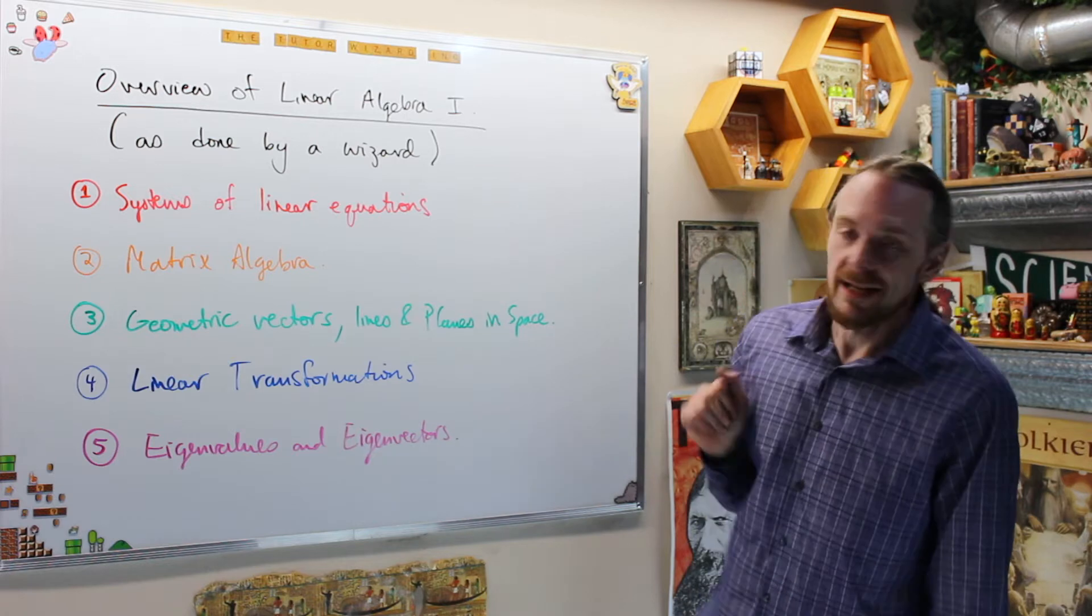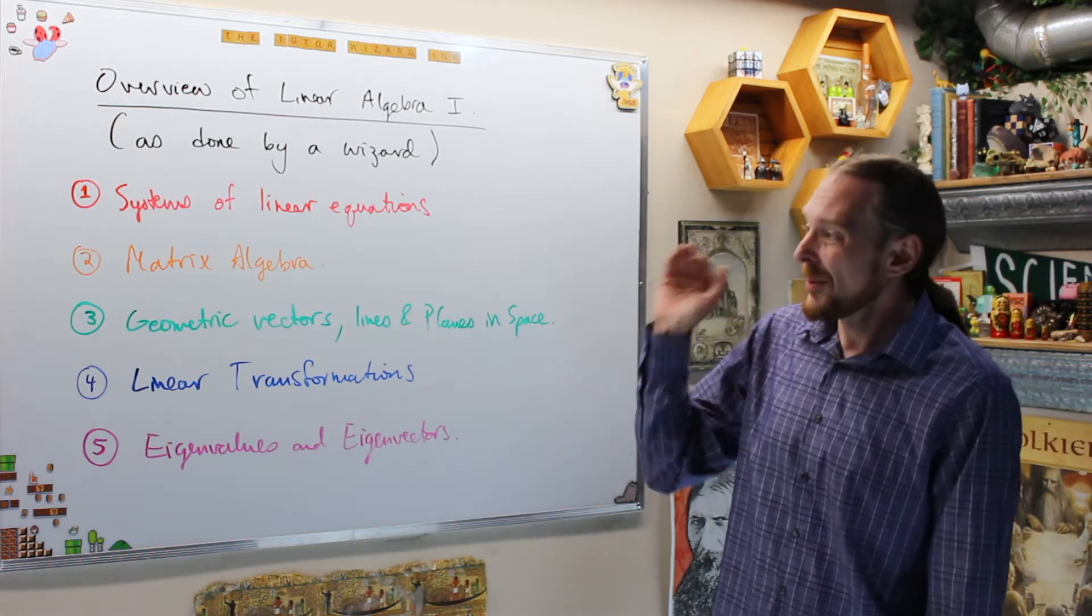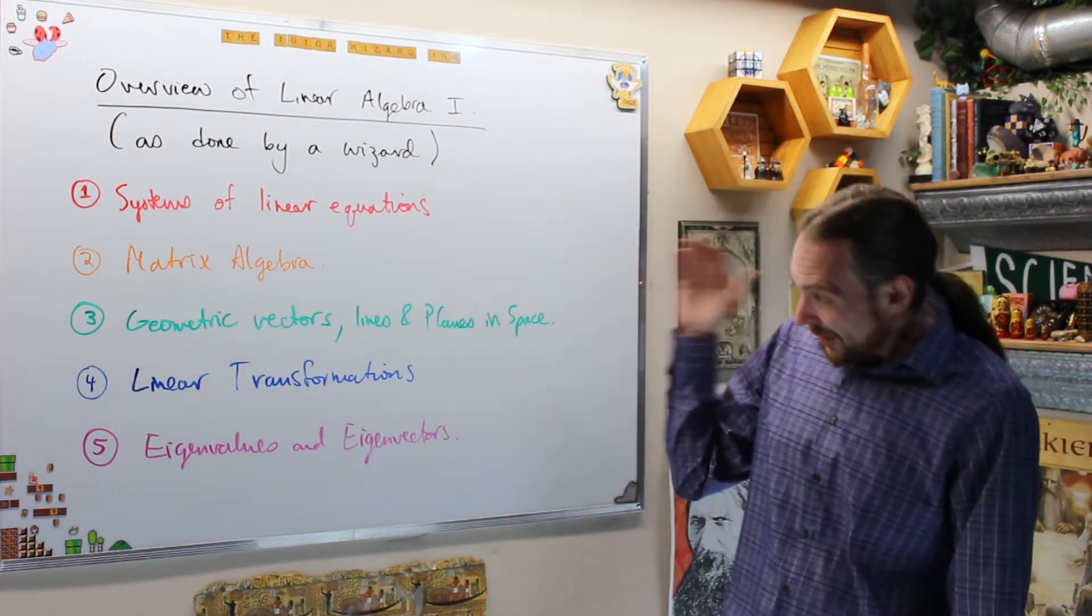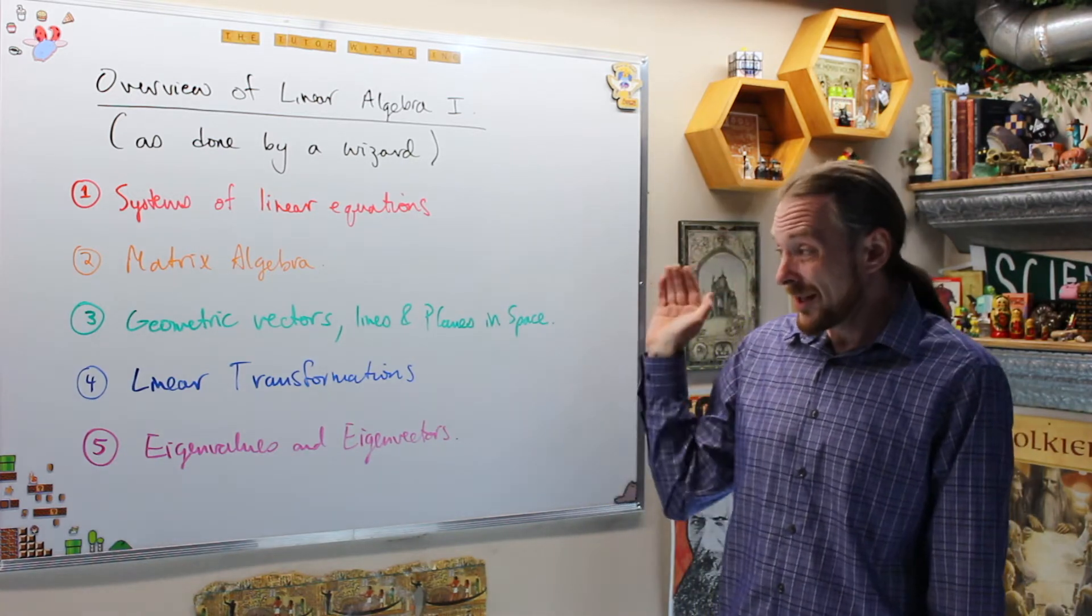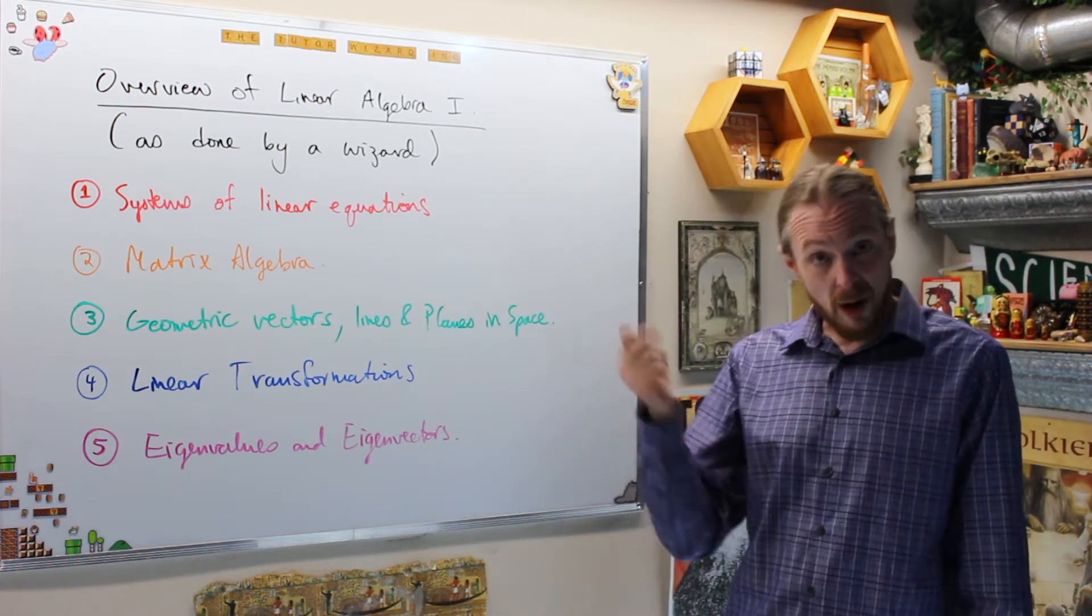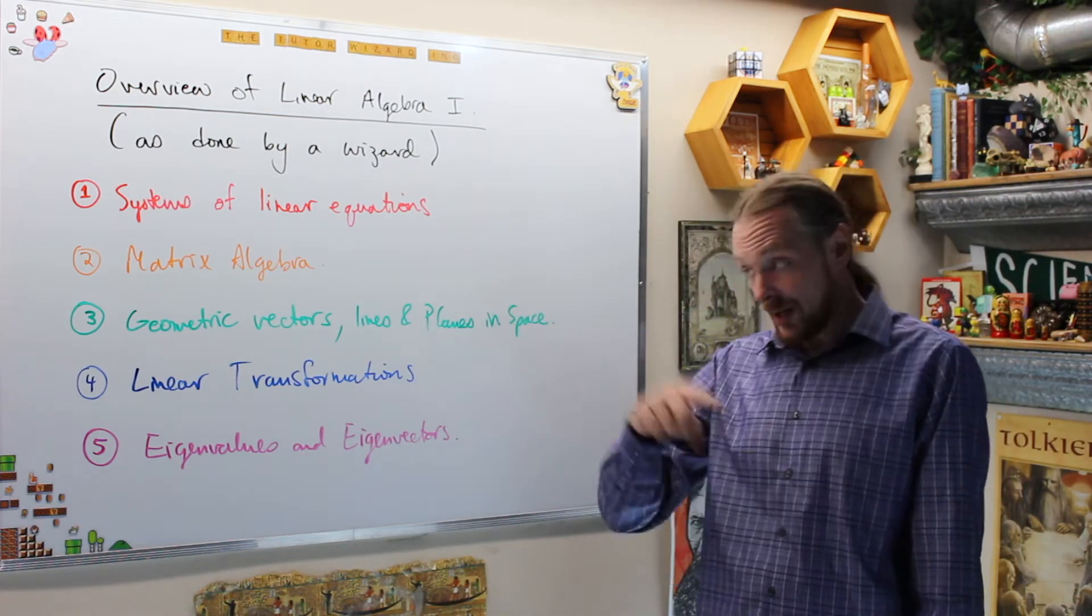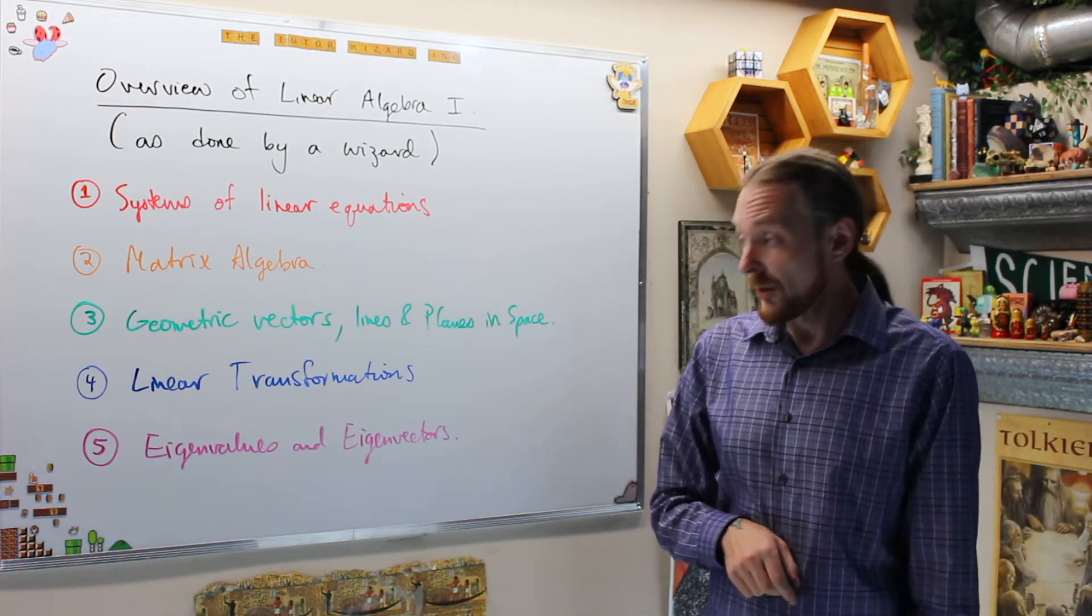What we're going to do is systems of linear equations. Then we're going to do matrix algebra. Then we're going to do geometric vectors and lines and planes in space. Then we're going to transition to moving space around. Linear transformations or operators for two space and three space or up and down dimensions. Play all those games.